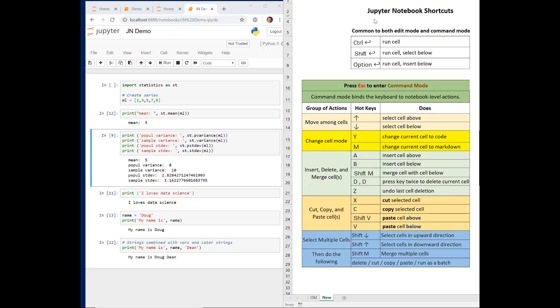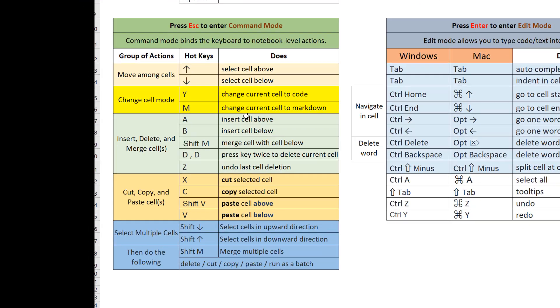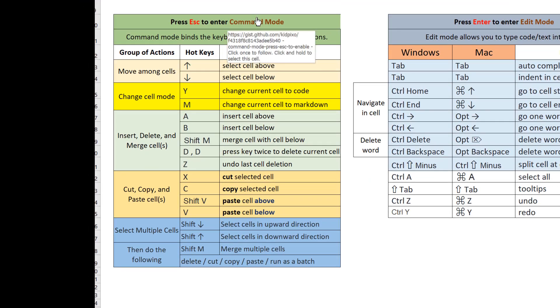In this video I'm going to explain some common keystroke commands that you can use in Jupyter Notebook to make it easier and quicker to edit. Here are some common keystroke commands. On this side we have command mode, which binds keys to notebook-level things like moving among cells, cutting, copying, and pasting cells. You press Escape to enter command mode and then you can enter one of these hotkeys.